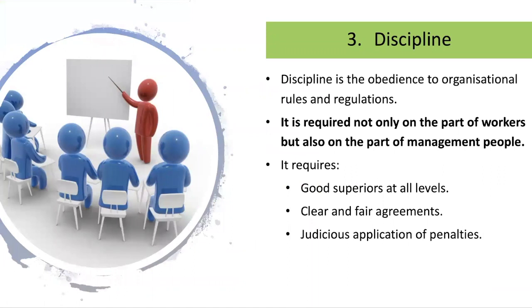The next principle is Discipline, which means rules and regulations to be followed in the organization. Discipline should be followed by everyone — like in a school, it applies to both teachers and students. In an organization, rules and regulations should be followed not only by workers but also by management. This requires good superiors at all levels, clear and fair agreements, and application of penalties when discipline is not followed.